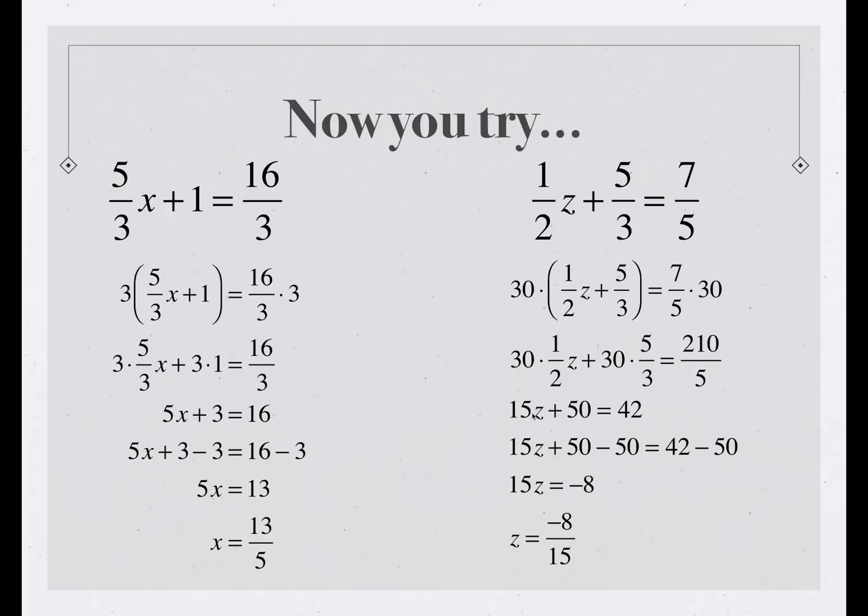30 times 1/2 is 15. 30 times 5/3 is 50. 210 over 5 is 42. We subtract 50 from each side, divide each side by 15, and we get z equals -8/15. And once again, I encourage you to check your answer.